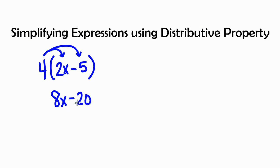So 8x minus 20 is the simplified form of 4 times the quantity of 2x minus 5.